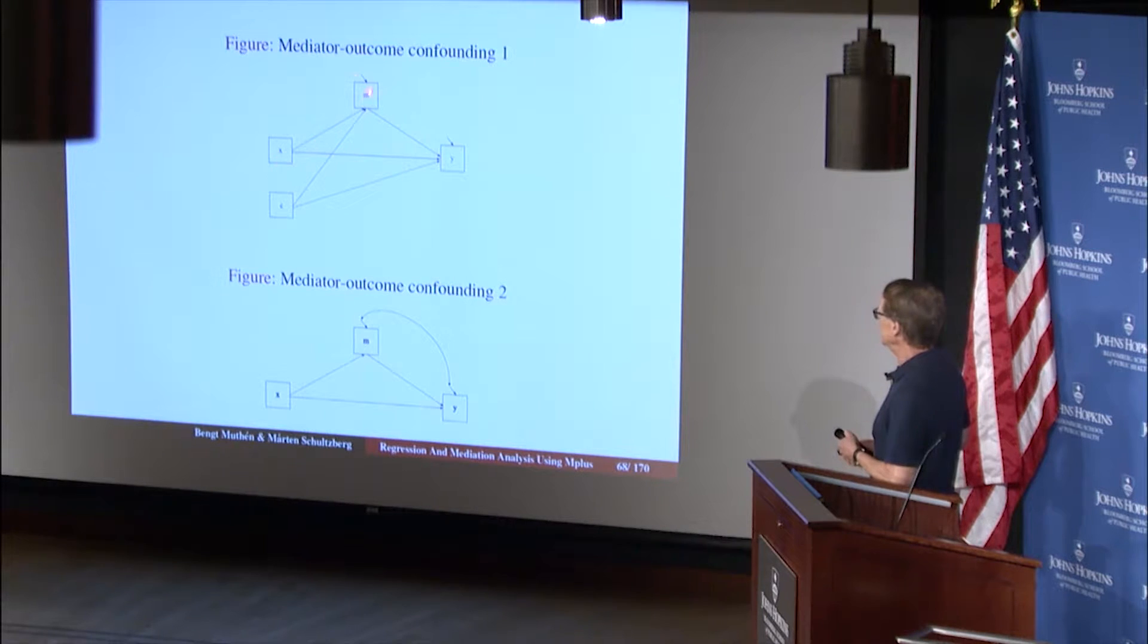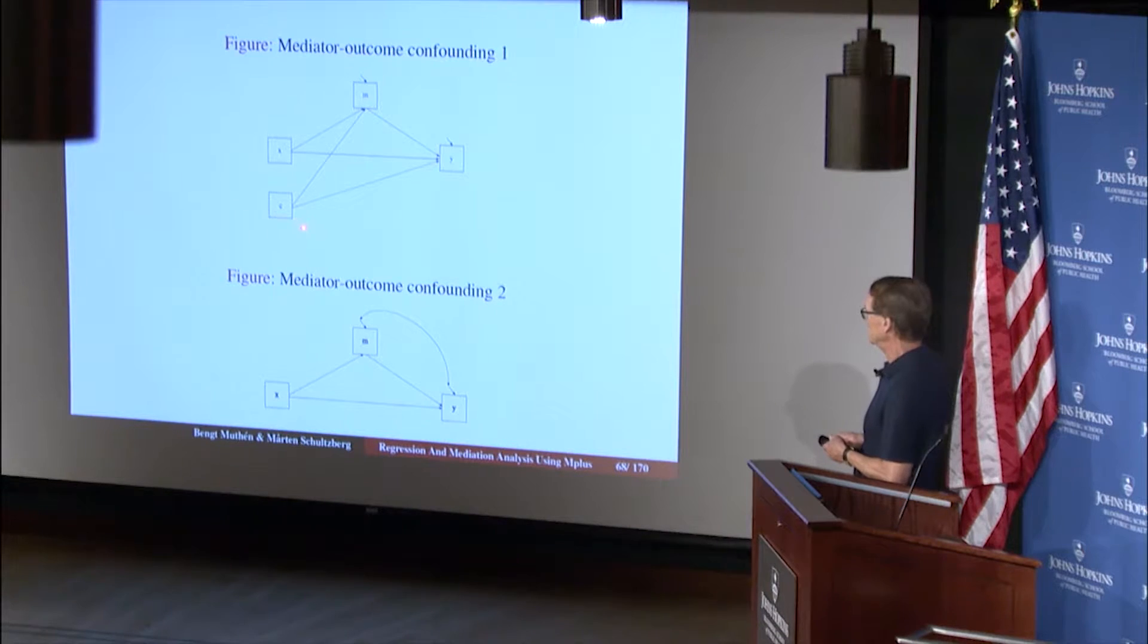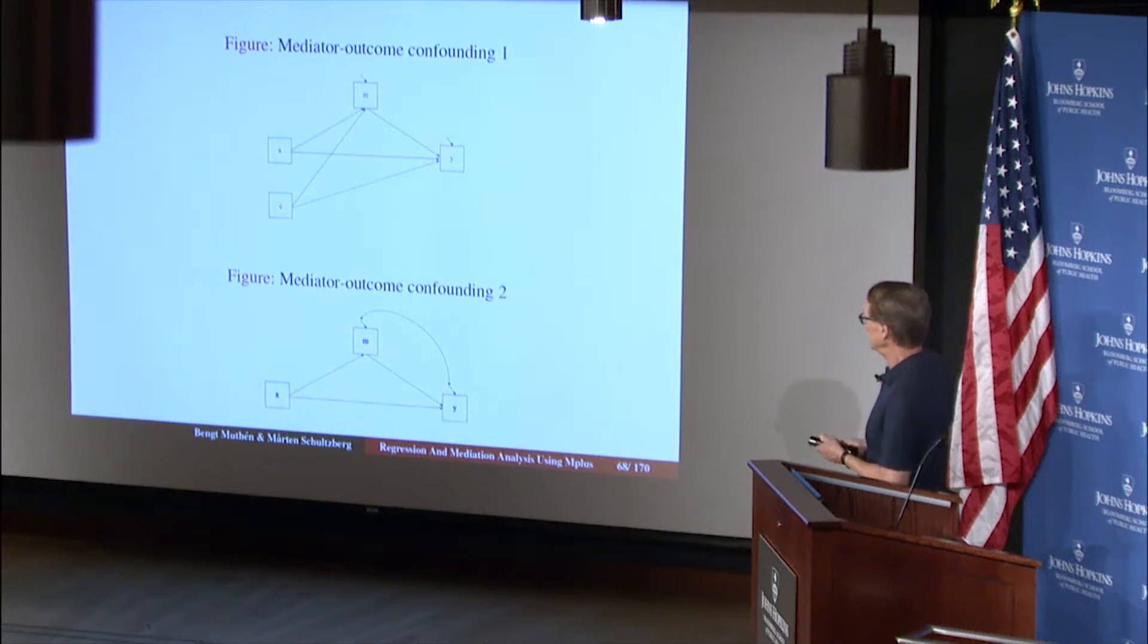We have the standard picture here, x influencing m and y, and m influencing y. And we have a control variable c. I was mentioning that c is good for many reasons. It increases the power to be able to detect effects of x on y. But it's also a way to control for possible confounding, mediator outcome confounding.